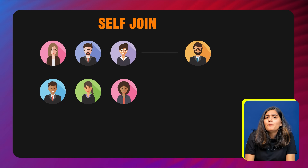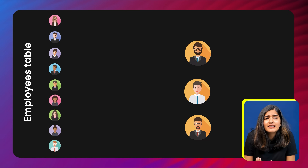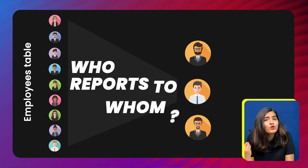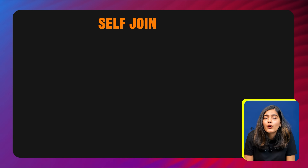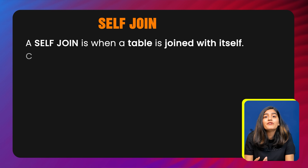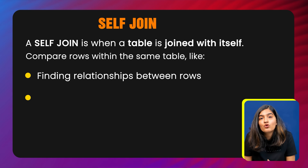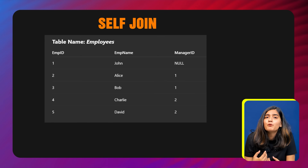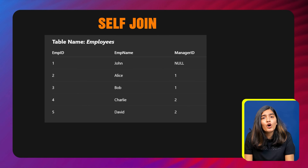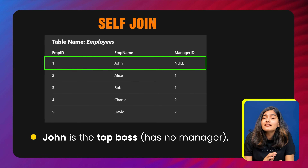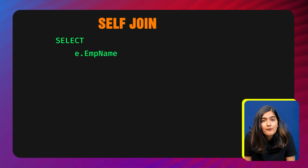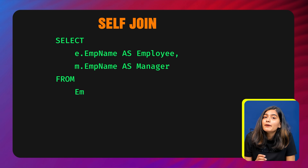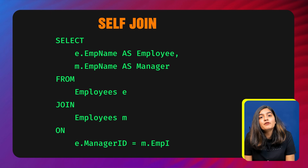Moving ahead with self join. Imagine you work in a company where each employee reports to a manager and all of them are listed in the same employees table. You want to find out who reports to whom, but both employees and their managers are stored in the same table. That's where self join comes in. A self join is when a table is joined with itself. We use it when we want to compare rows within the same table — like finding relationships between rows, or matching a row to another row in the same dataset. Suppose the employees table contains employee_id, employee_name, and manager_id. John is the top boss with no manager; Alice and Bob report to John; Charlie and David report to Alice. The query is: SELECT e.emp_name AS employee, m.emp_name AS manager FROM employees e JOIN employees m ON e.manager_id = m.emp_id.